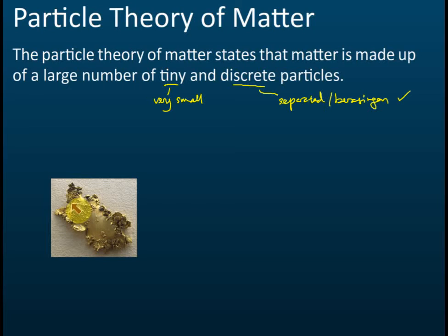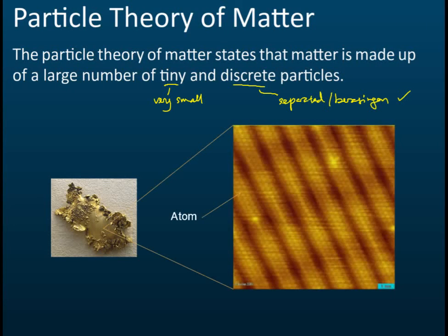If you use a good microscope, the electron microscope, to observe this, you will get something like this. You can see that inside this gold, there are millions or billions of small particles. These particles are not continuous, they are separated. They are very close to each other, but they are not joined together. We call this atom. That is what the particle theory of matter is about.